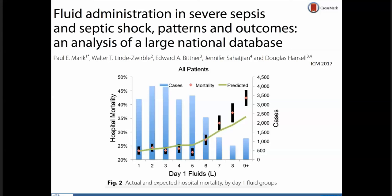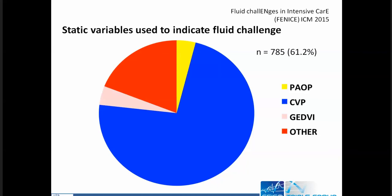What do people do when deciding to give fluids? In the FENICE paper published with ESICM, we found that in 2015 static variables of preload were still preferred over dynamic variables of preload when clinicians were deciding how to guide fluid management at the bedside. In practice, in 2015 the CVP was still the variable used most.